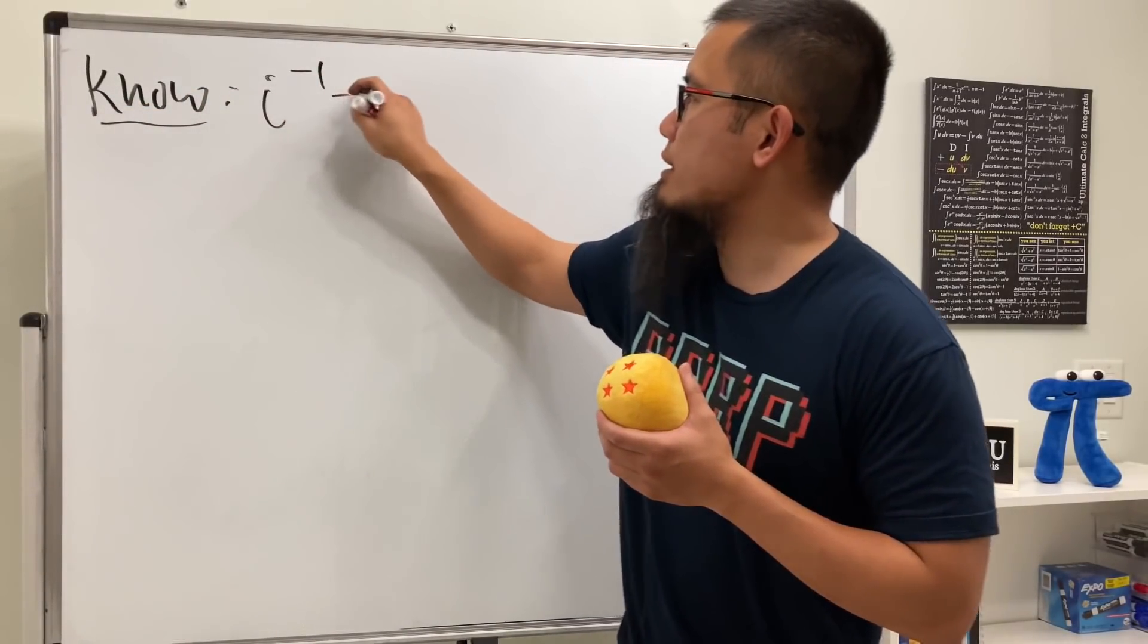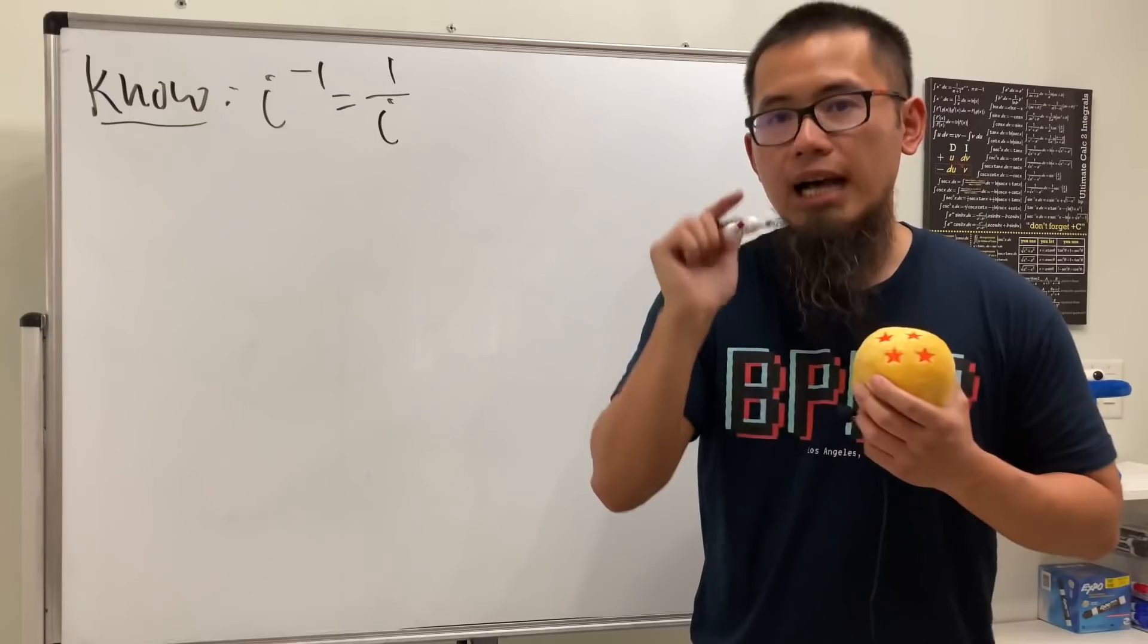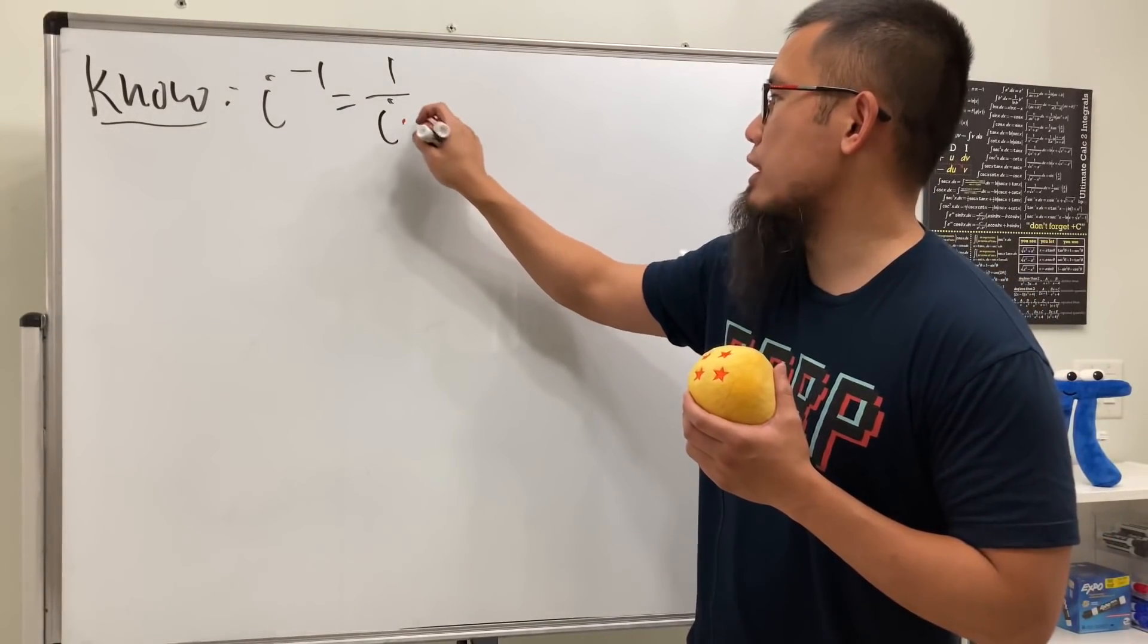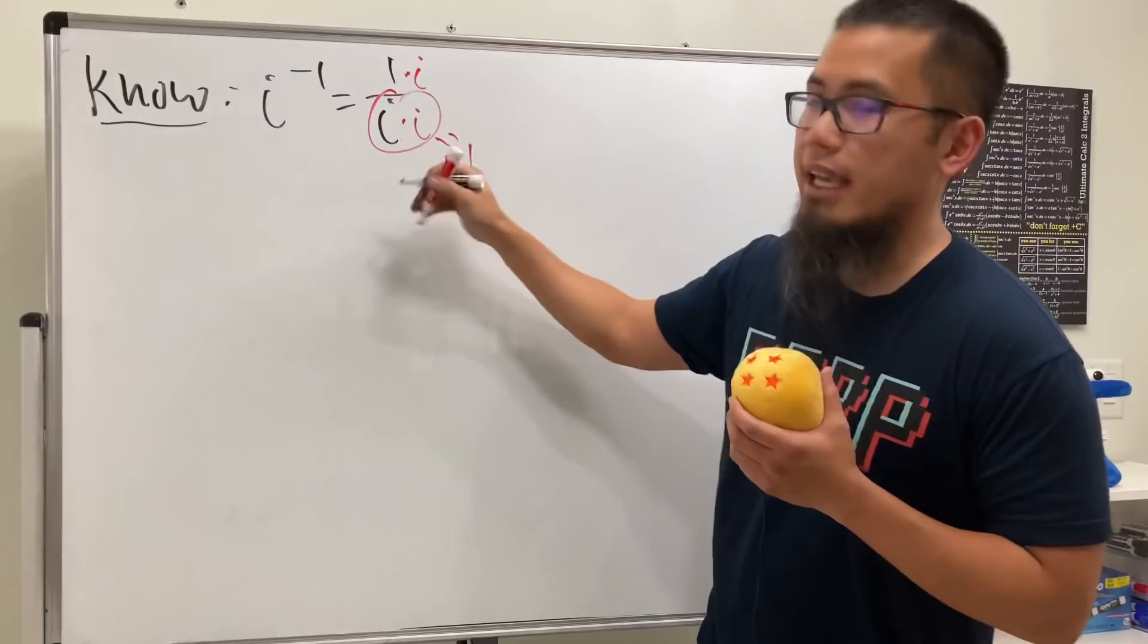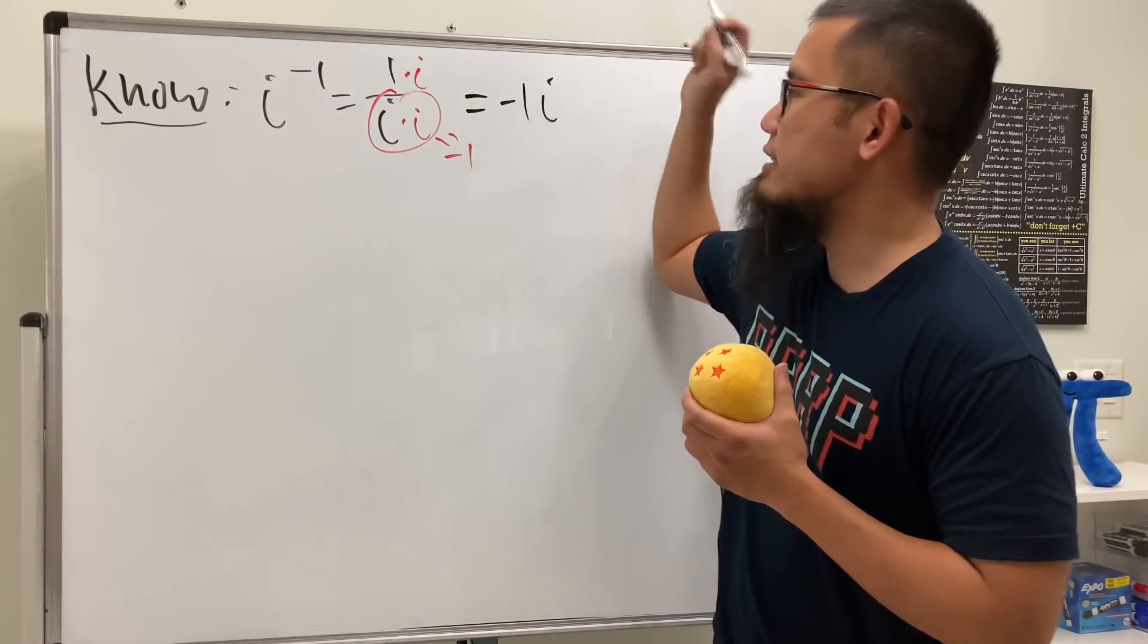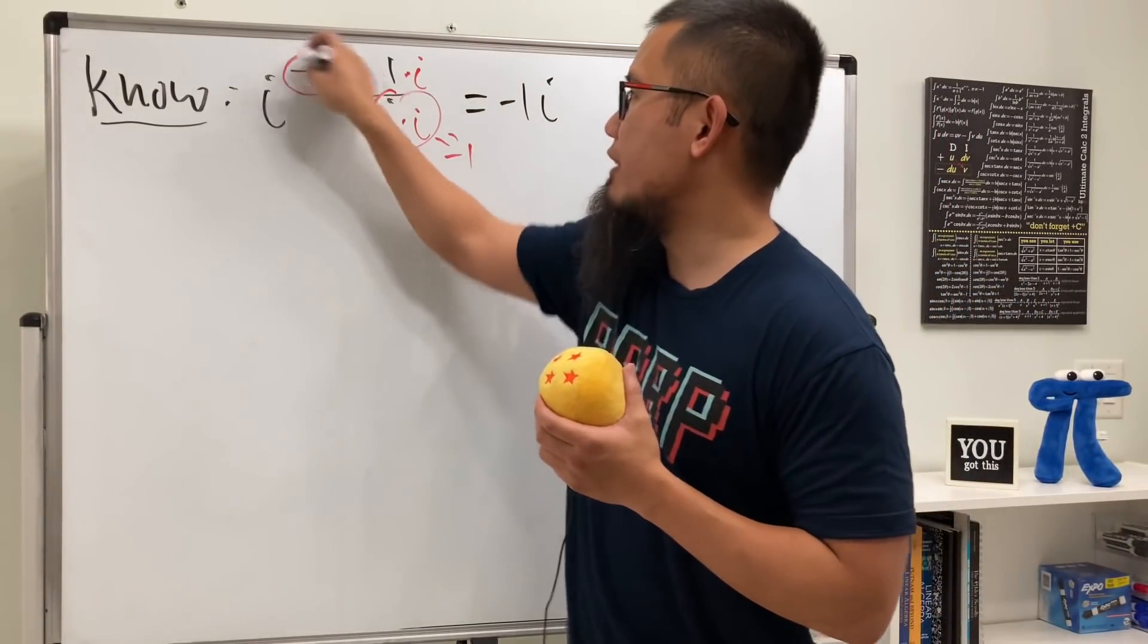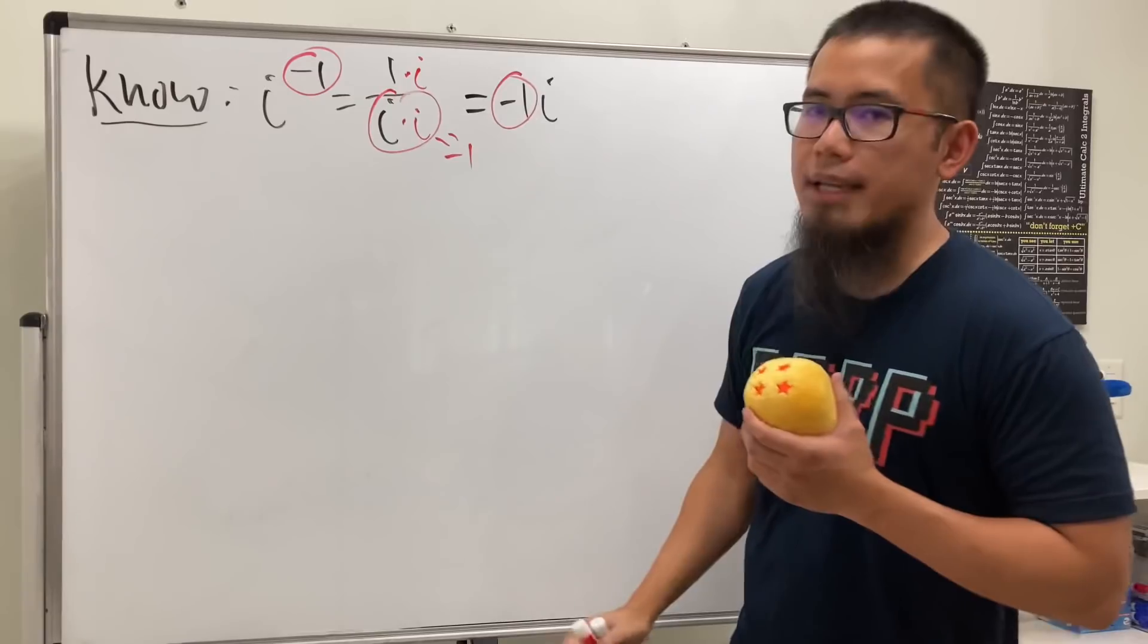Well, we know that i to the negative 1 is equal to 1 over i, and you know that I don't like i to be on the bottom, I like to be on the top, so let's multiply this by i and also this by i. This right here will give us negative 1, so altogether we get negative 1 i. Nice, because you see that here we have negative 1 in the power, but now it's in the front.